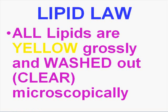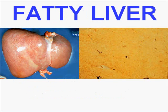The lipid law says all lipids are yellow grossly, no matter what kind they are — cholesterol or otherwise. In histologic processing, they are washed out because xylene dissolves the lipids. Here's a fatty liver. All you could say grossly is that it looks a little bit yellower than normal, but you can recognize it as a liver. Microscopically, this area might appear as a whole bunch of washed-out spaces because that's where the fat was.